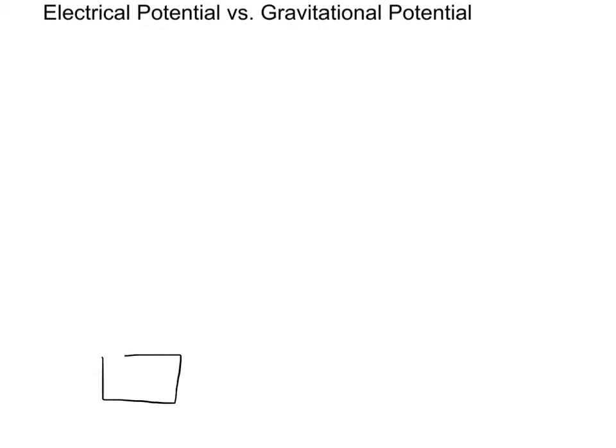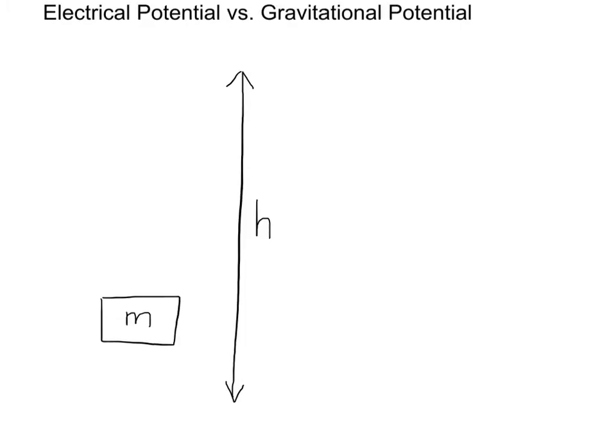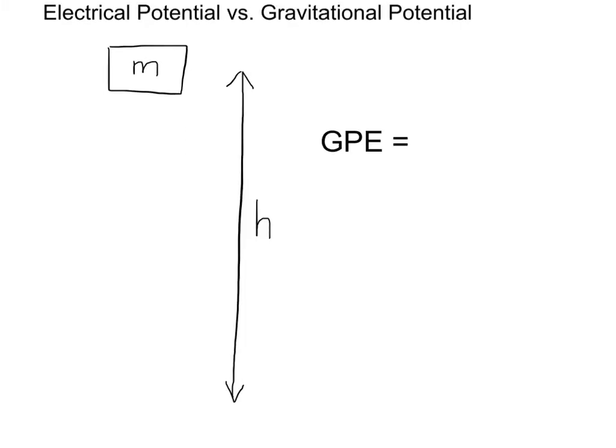Before we begin our discussion of electrical potential, I want to revisit gravitational potential because it's much more familiar. Recall, if I have a box of mass little m, and I raise it from a height of 0 up to a height of h, then the gravitational potential energy, or GPE, is equal to the mass m times g times the height h.